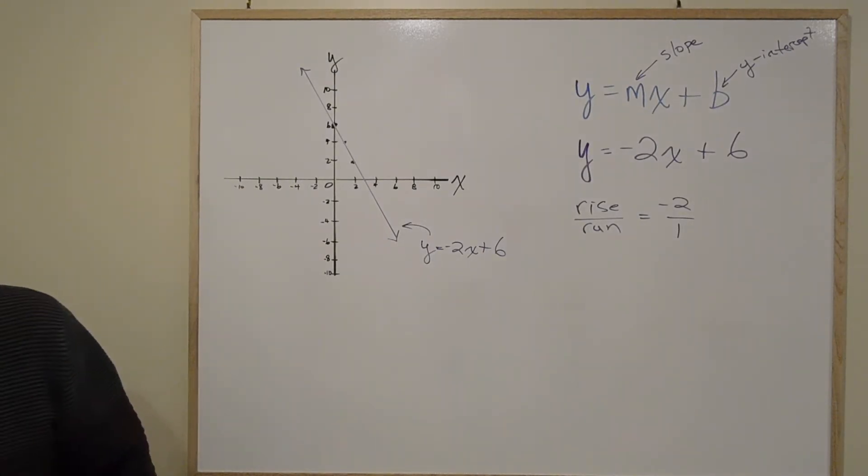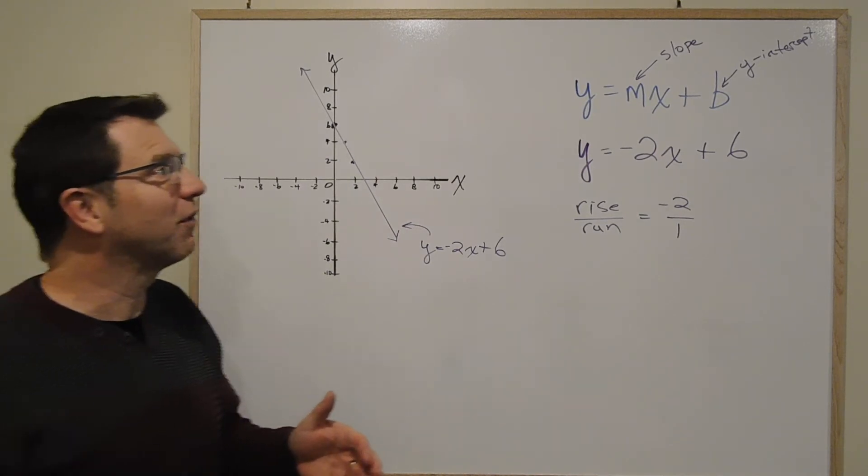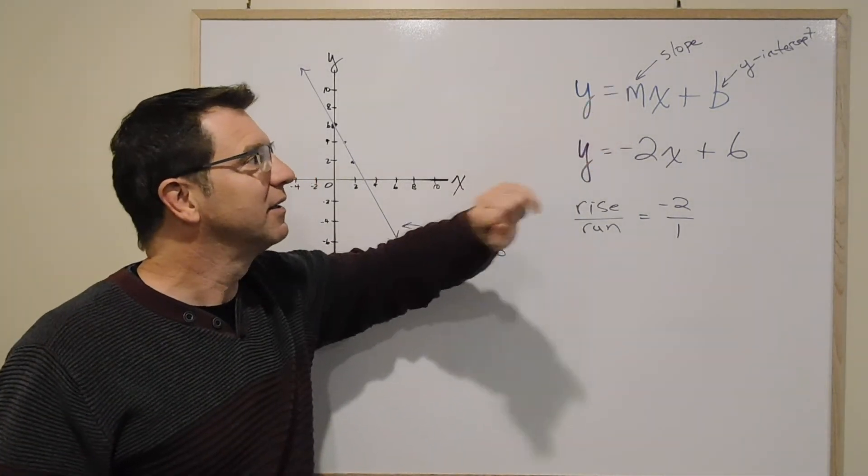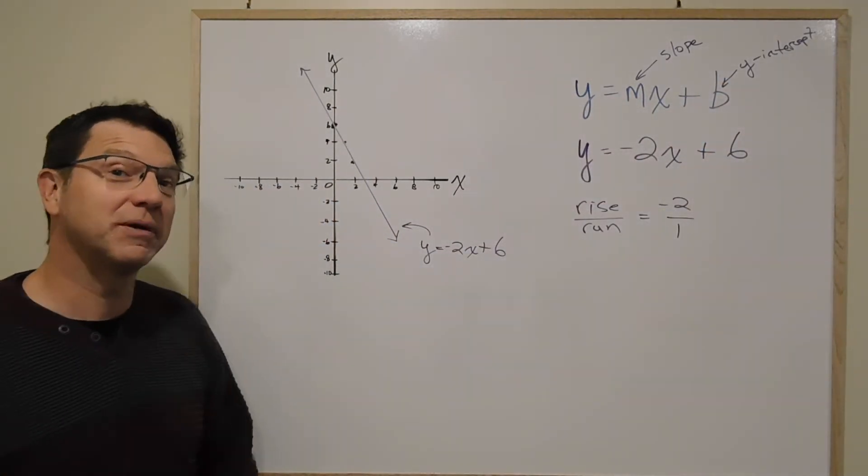Using the slope intercept form. Why we call this the slope intercept form is because as soon as we look at it, we can see the slope and the y intercept. That's why we call it the slope intercept form.